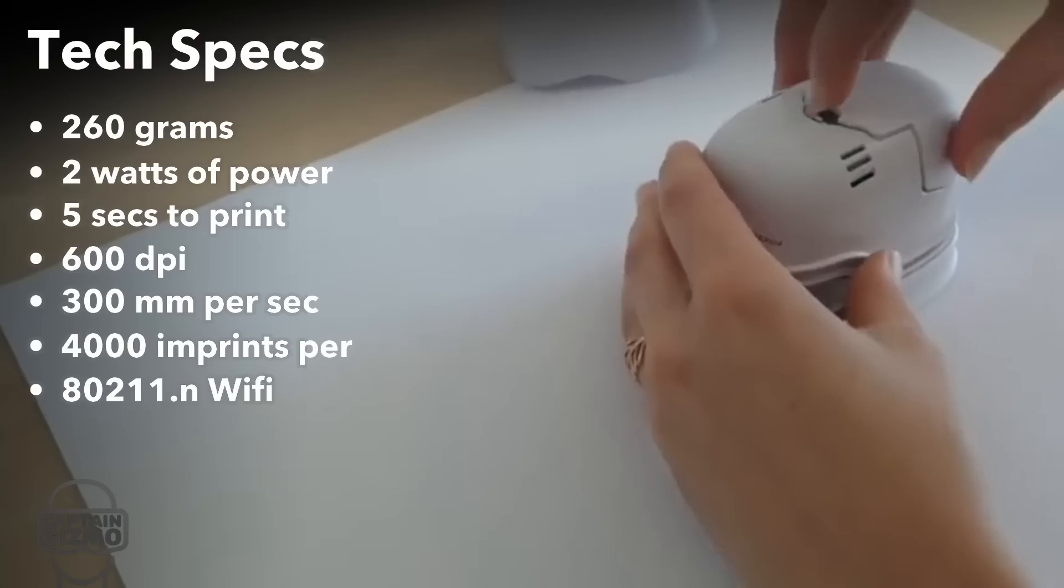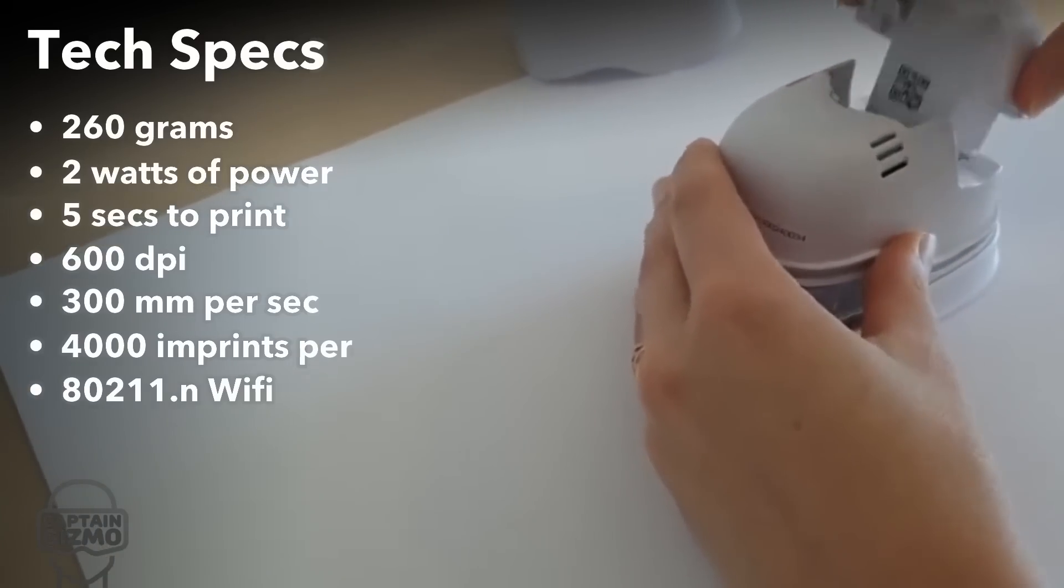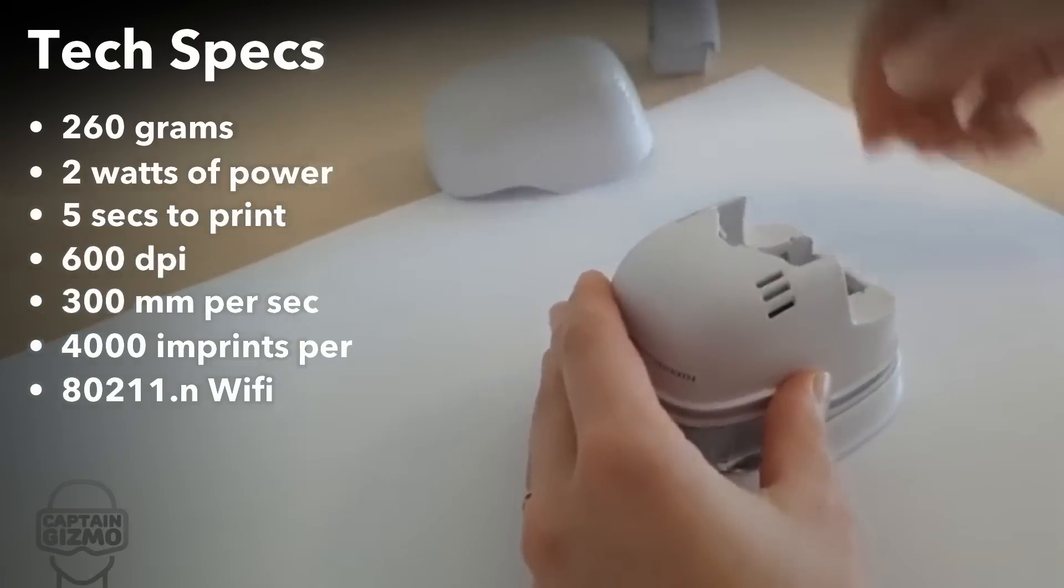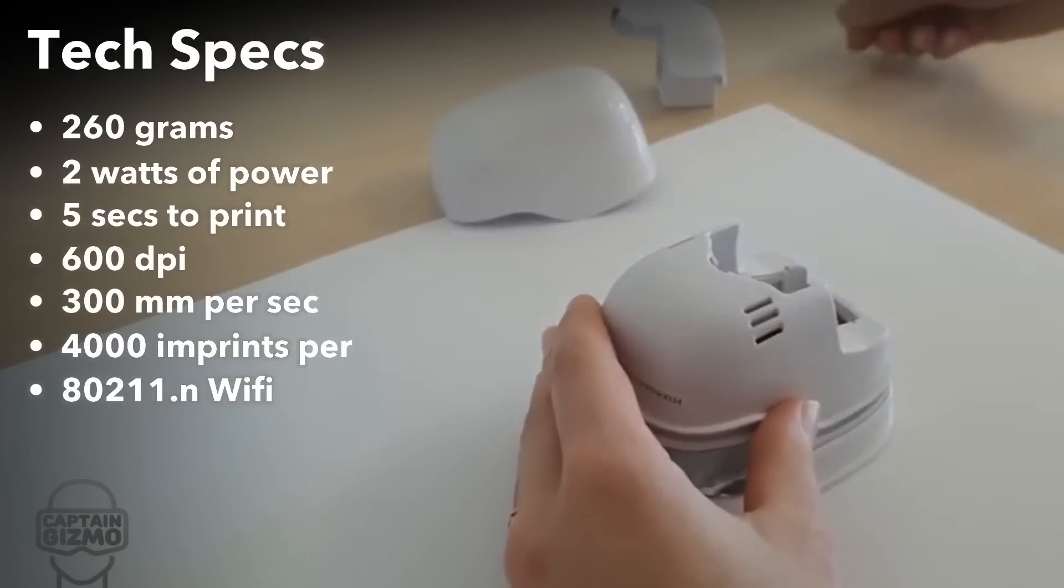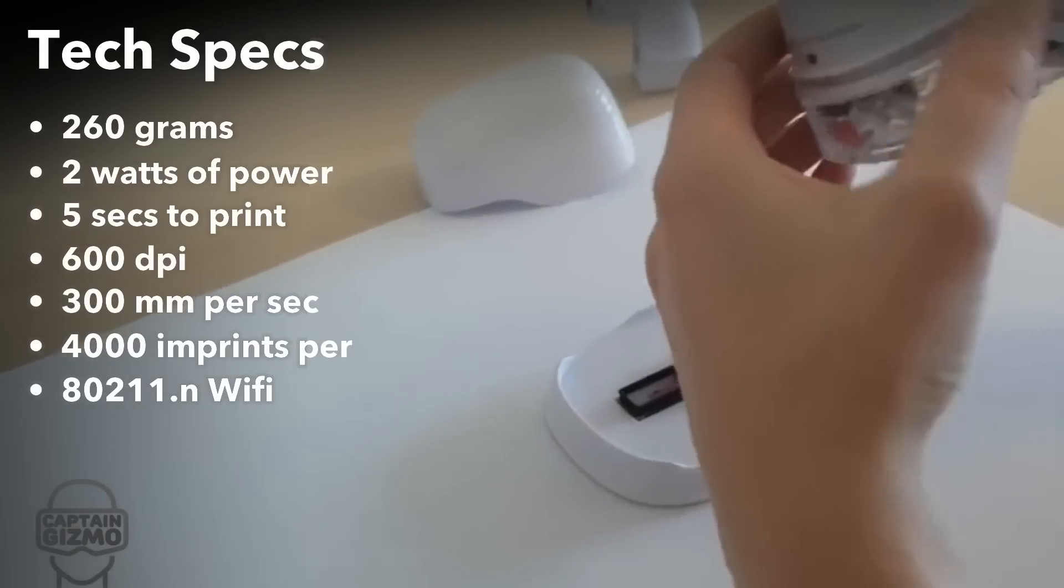The PrintBrush XDR is as small as a computer mouse. It weighs 260 grams and uses 2 watts of power. It is ready to print in 5 seconds at 600 dpi.